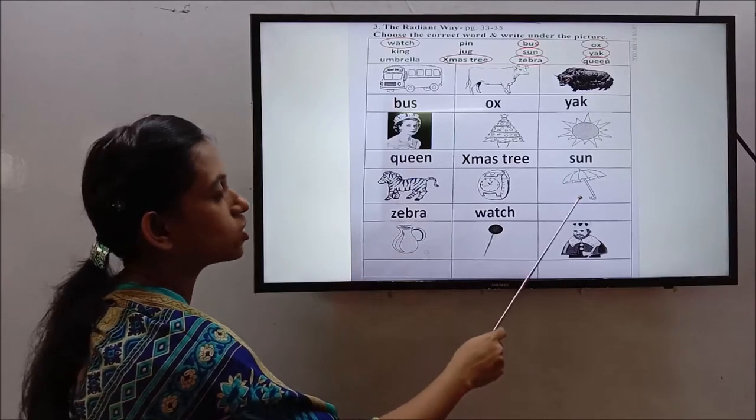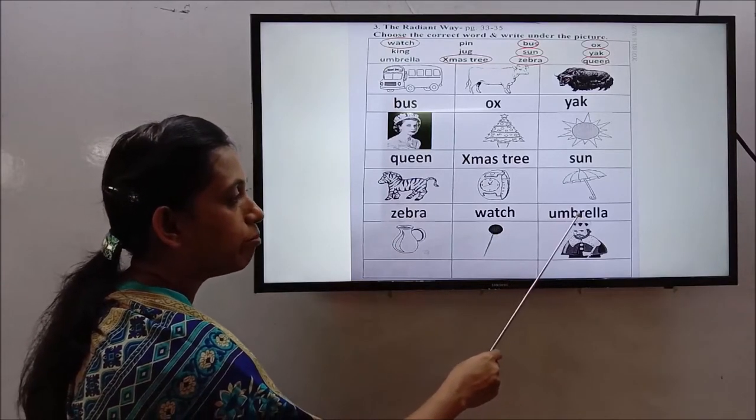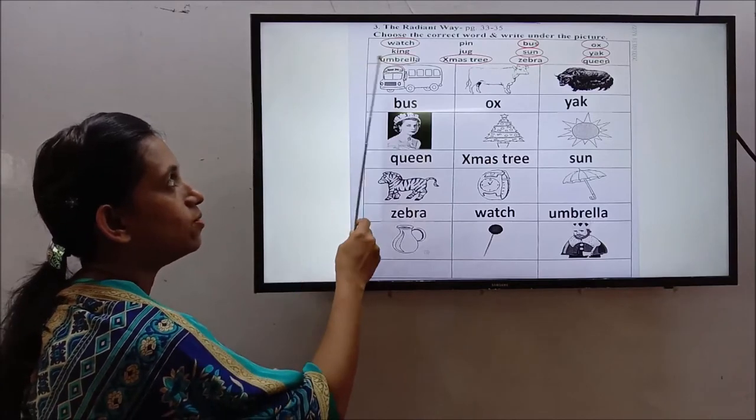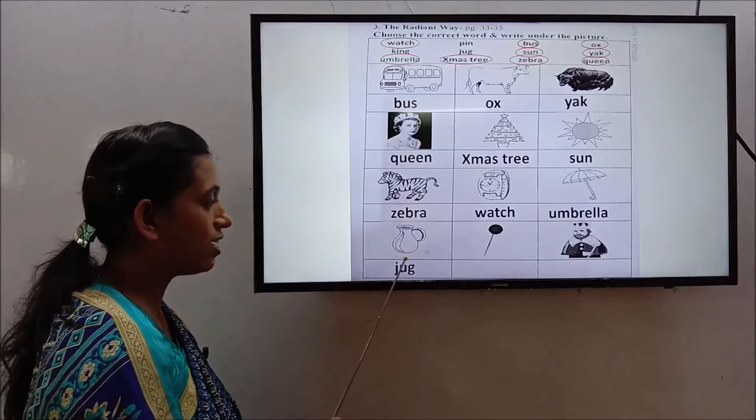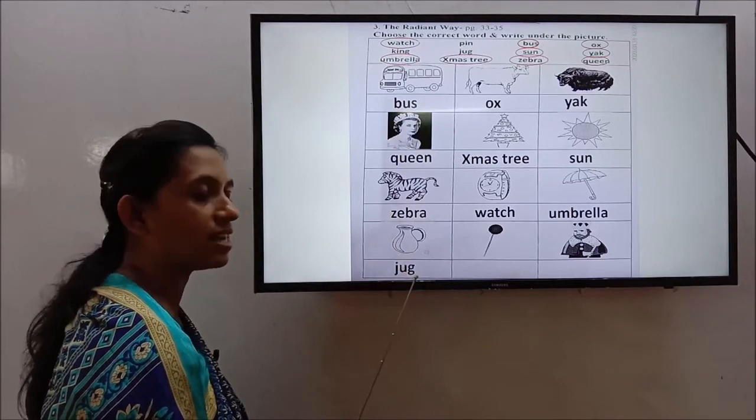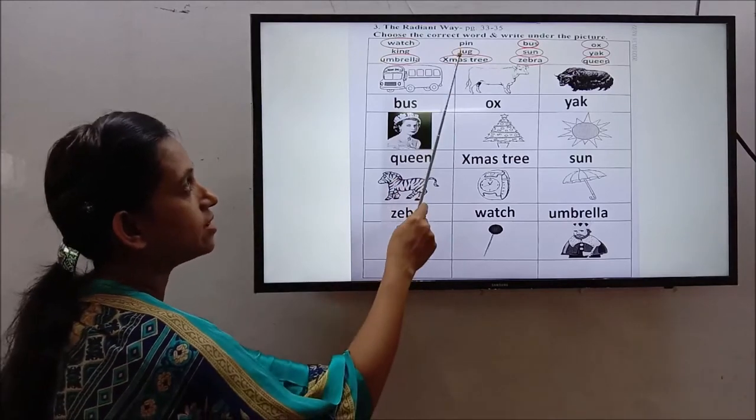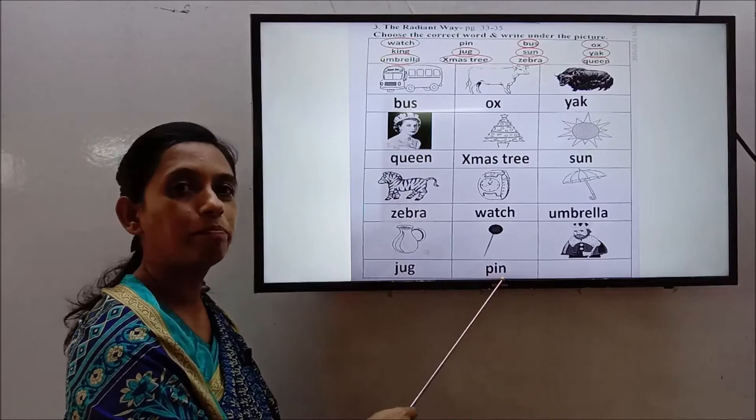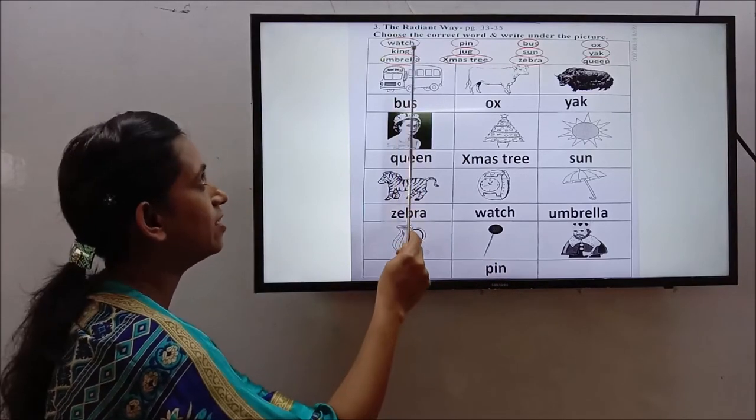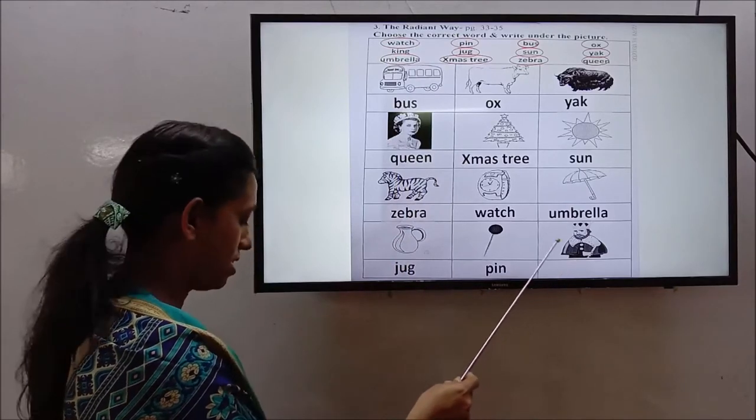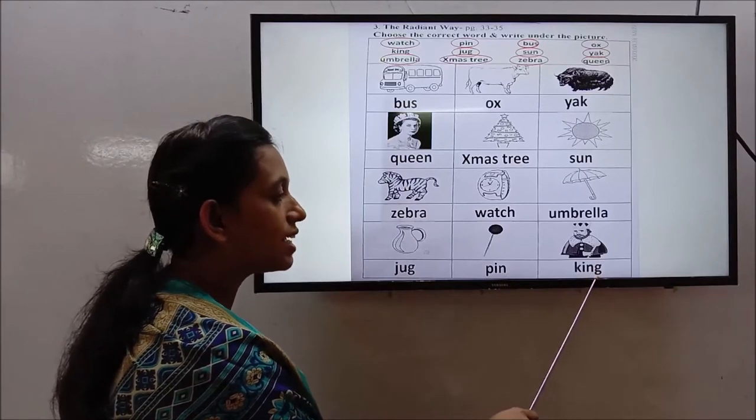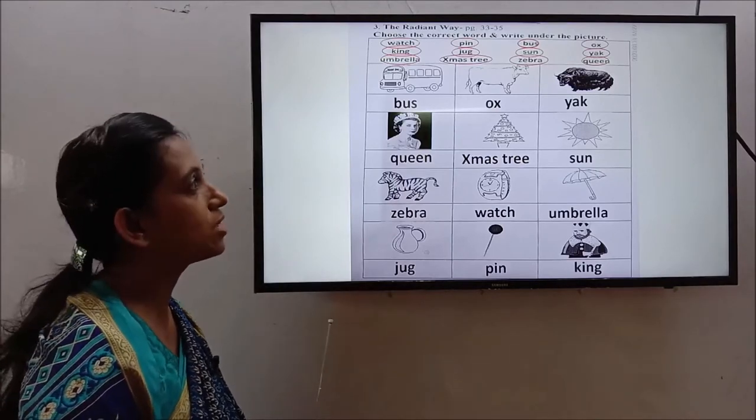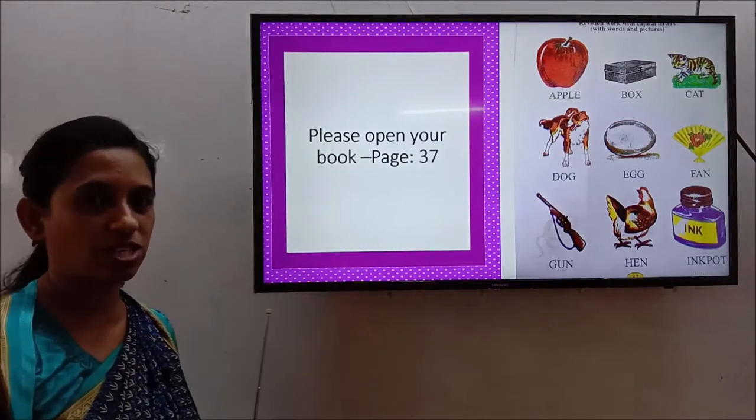Where is watch? We'll circle this one. Now next one, umbrella. U-M-B-R-E-L-L-A. Umbrella. So we'll circle this one. Now jug, J-U-G, jug. Okay, let's circle this. Now can you tell me what is this one? Pin, P-I-N. Pin. Okay, where is pin? Here. We will circle this one. Now the last one, king, K-I-N-G. King. King means raja.